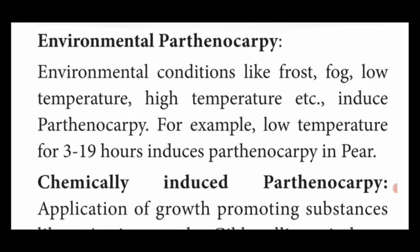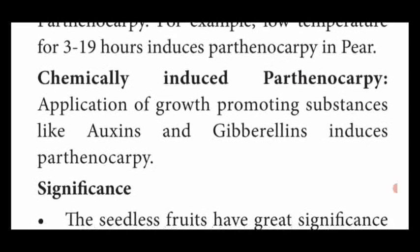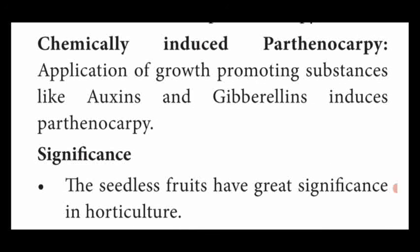So these are the three types of parthenocarpy: one is genetical parthenocarpy, another is environmental parthenocarpy, third one is chemically induced parthenocarpy. Genetical parthenocarpy means parthenocarpic fruits are produced by hybridization or mutation process. Environmental parthenocarpy means external factors such as frost, fog, low temperature, or high temperature induce parthenocarpic fruits. Chemically induced parthenocarpy: growth hormones such as auxin and gibberellin, application of these growth hormones induces parthenocarpic fruits.